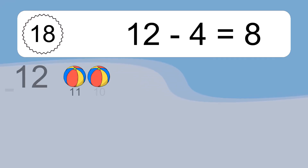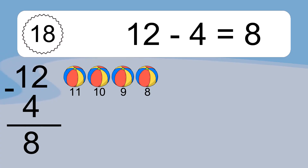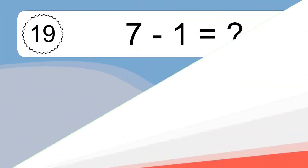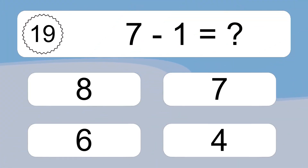12 minus 4 equals what? 12 minus 4 equals 8. Let's count it. 11, 10, 9, 8.